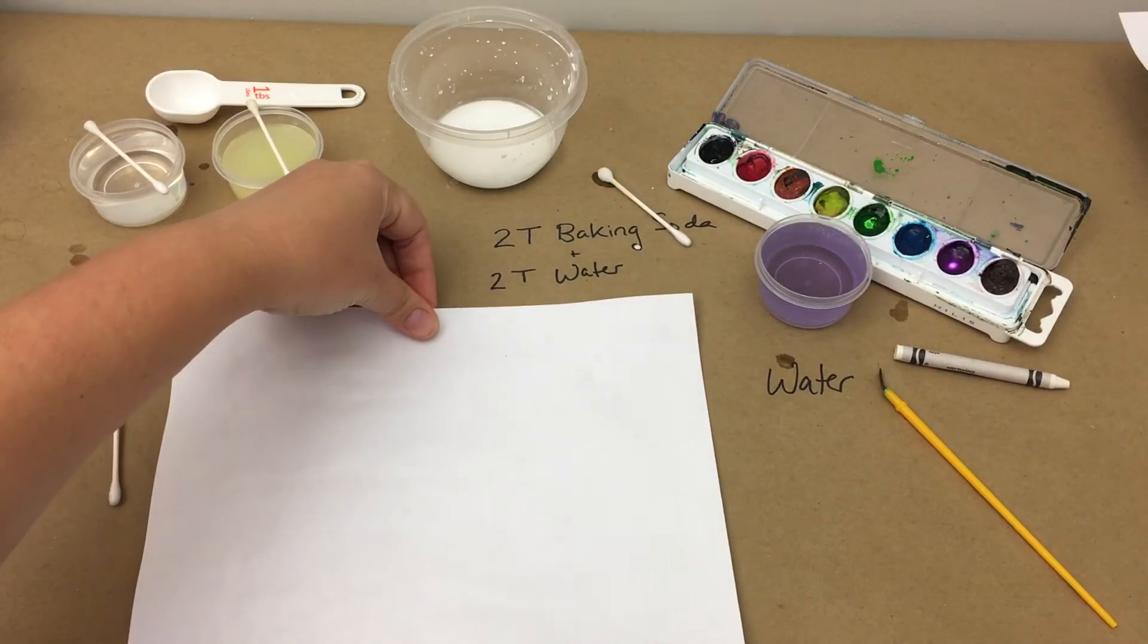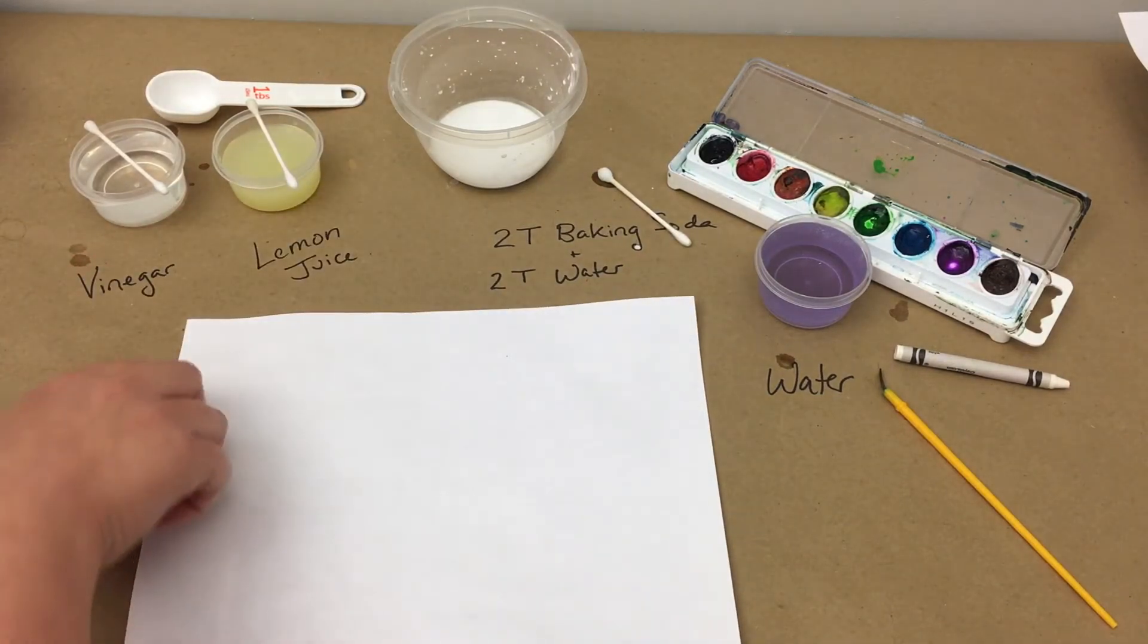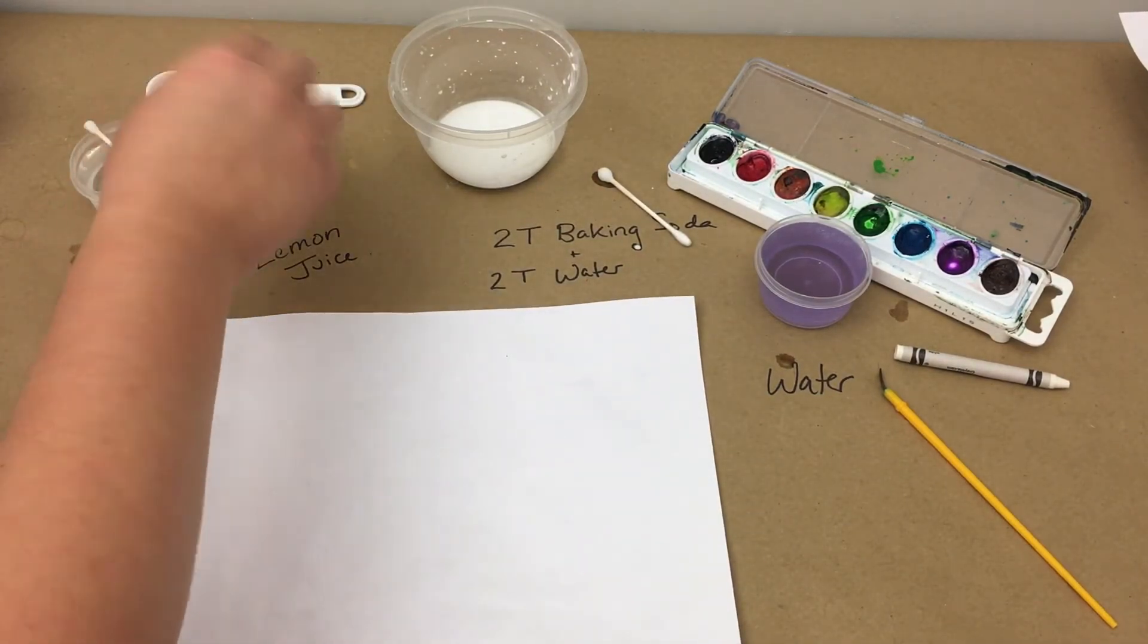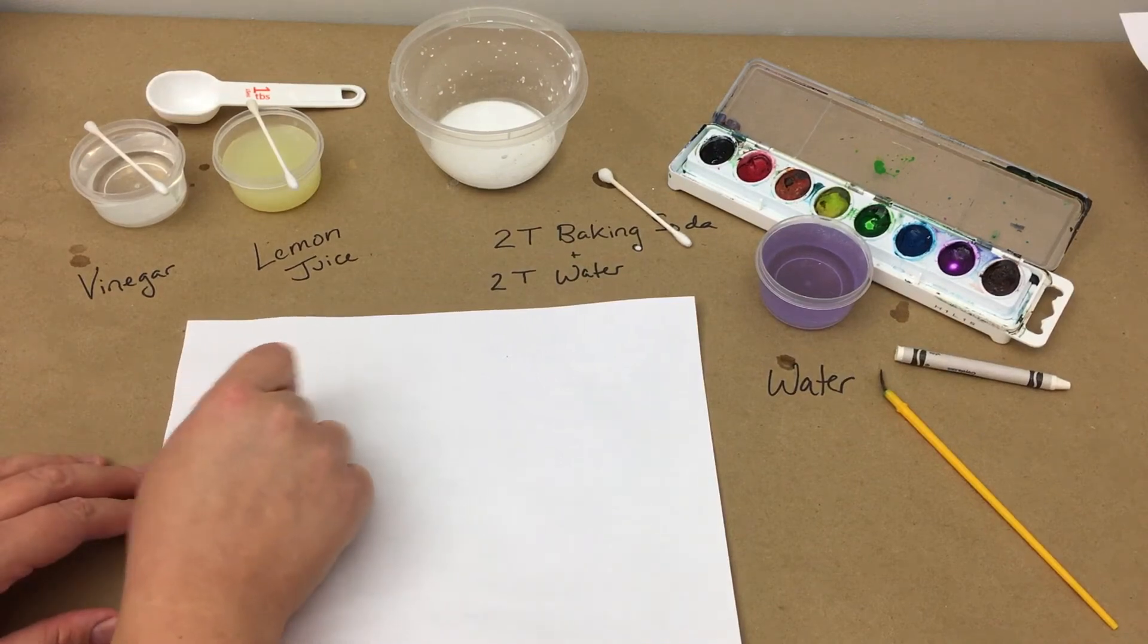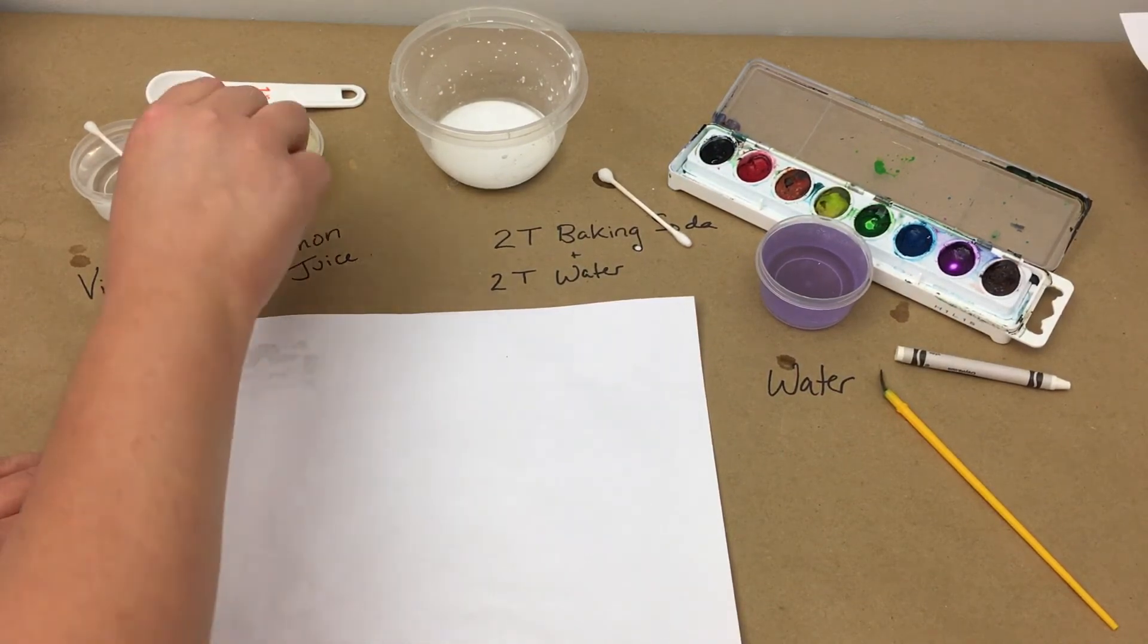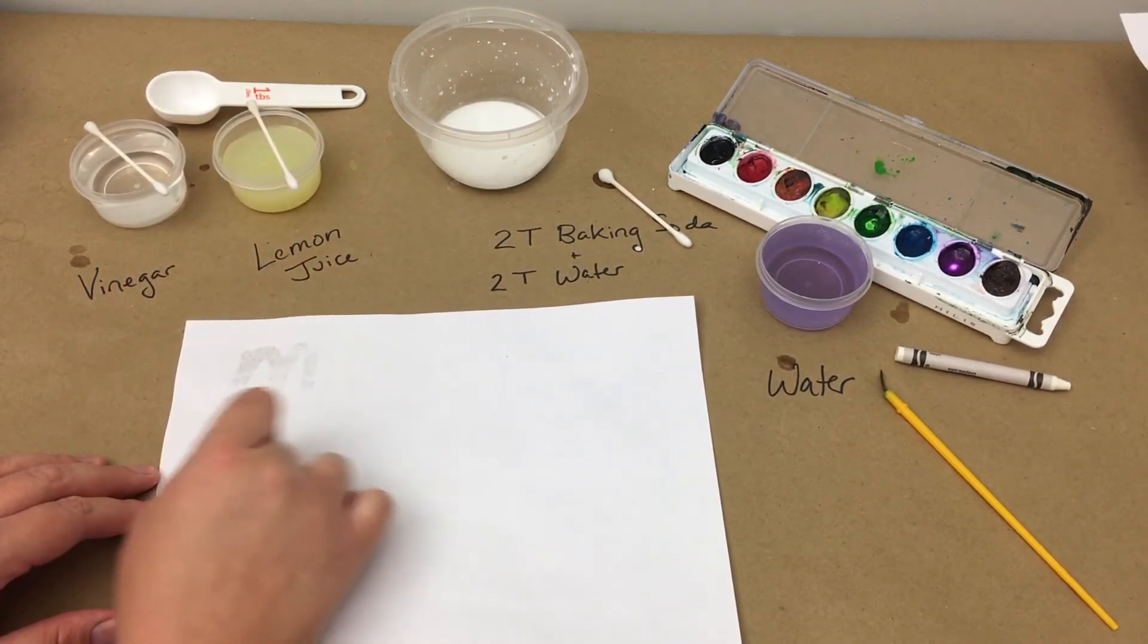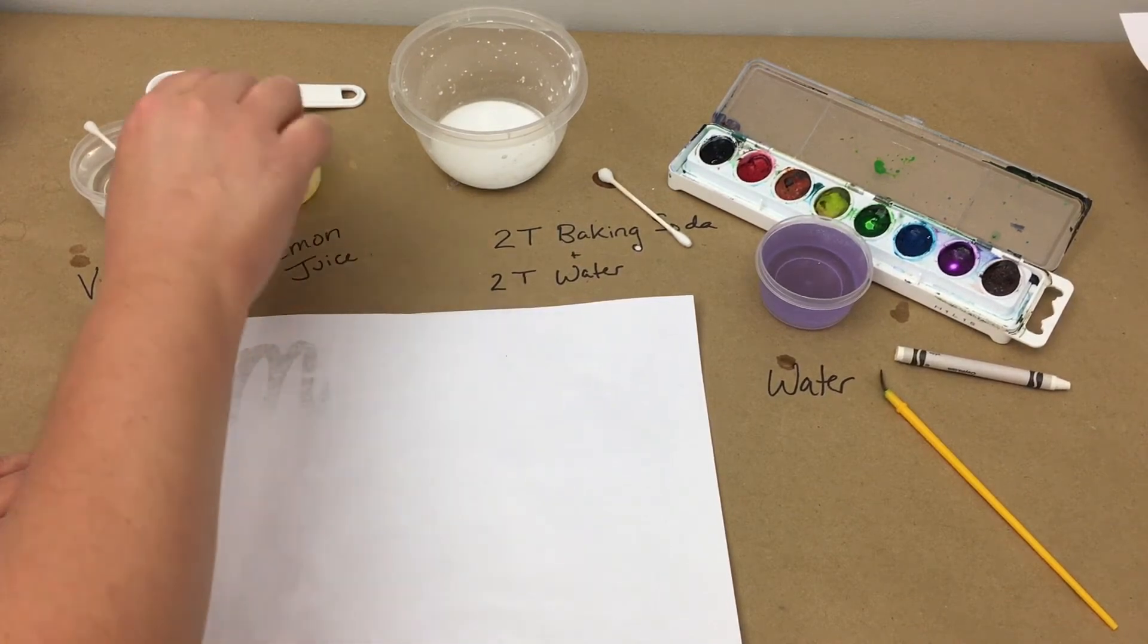Here is our message that we wrote in the baking soda and water mixture. As you can see, we can't see anything. As mentioned before, we need to use an acid, such as the lemon juice, in order to reveal our message.